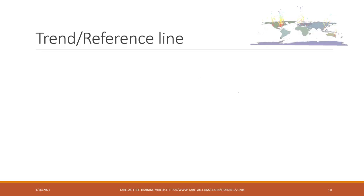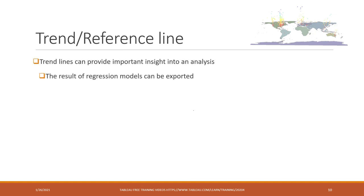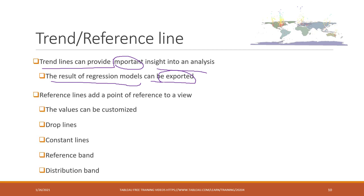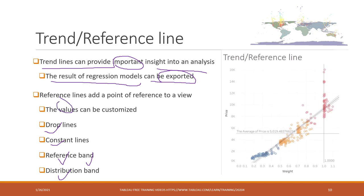Since we are talking about reference lines, let's look at what kinds of reference lines or trend lines we can have. Trend lines can provide important insight into the analysis. The result is always regression models, and those results can be exported. We also have other types: drop lines, constant lines, reference lines, reference band, and distribution band. The values on the lines can be customized. For example, we can have a constant line, a trend line, and an average line.